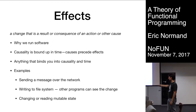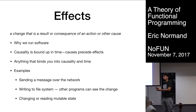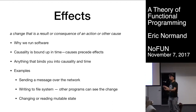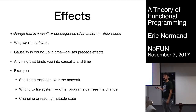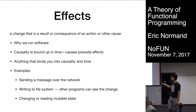Some examples of effects: sending a message, writing to the file system — because if you're writing to the file system, other programs can see that change. And having mutable state — you could have state shared between different threads, and reading it depends on when you read it, what the value is. So it's all about time and causality.